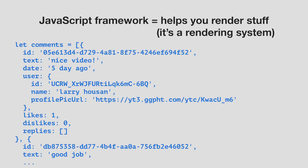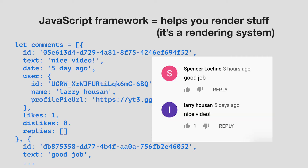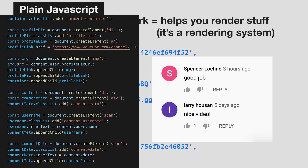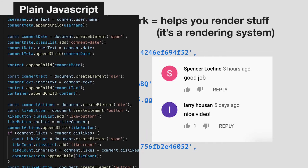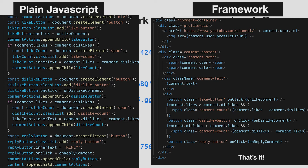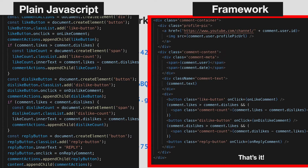A very common task in web development is taking some complex data and using JavaScript to render that data on the webpage. For example, let's say we have a list of comments on a YouTube video and we want to render it to look like this. In the beginning there were no frameworks, so developers just used plain JavaScript to render data. This is the code to render the comments using plain JavaScript, and this is the code using a framework. As you can see, this code is way easier to read and write — you can even see the structure of the HTML you're rendering. The framework basically converts it into JavaScript for you, and that JavaScript renders it on the page. That's why web developers use frameworks: it makes our code so much more simple.